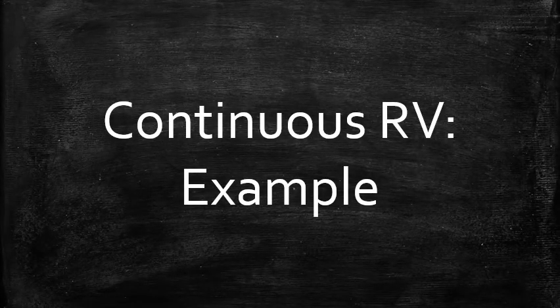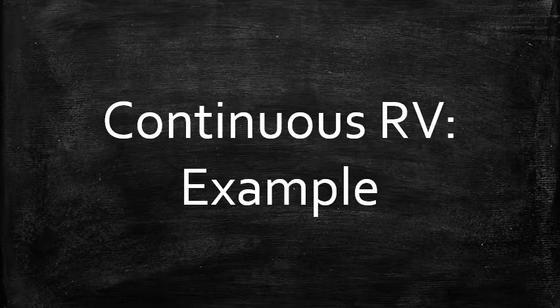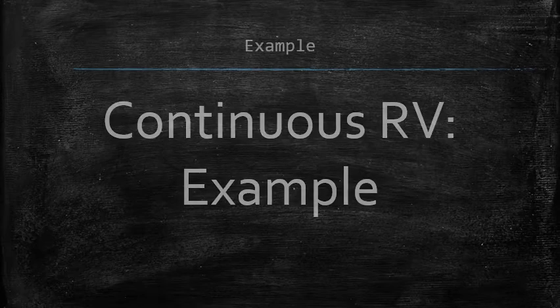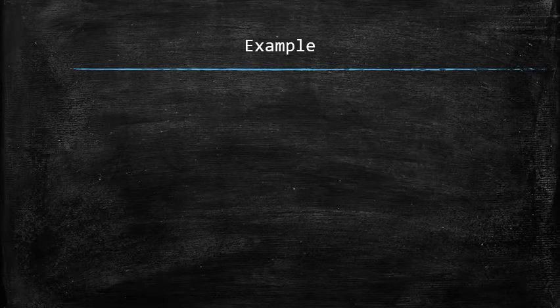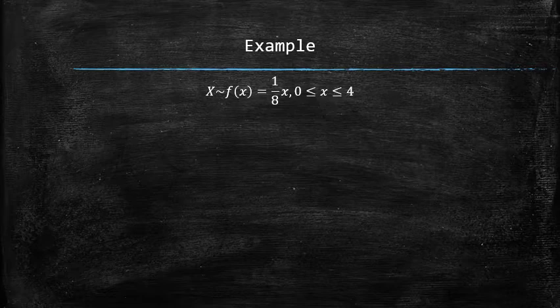Next, we will consider an example of a continuous random variable and practice some useful skills. Let x be a continuous random variable with the probability density curve described by the graph of this linear function on the interval from 0 to 4.